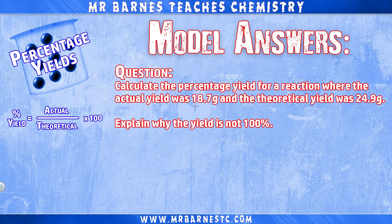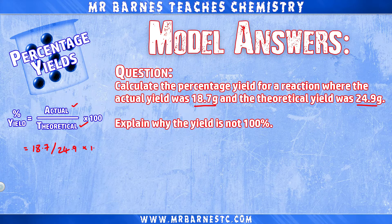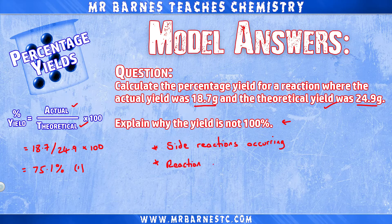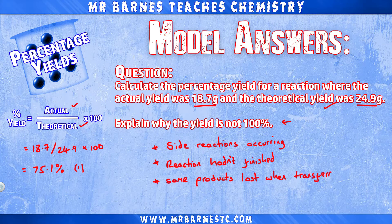Okay, let's go through. Part one, we have the actual yield of 18.7 and the theoretical yield of 24.9. So simply, 18.7 divided by 24.9 multiplied by 100 gives 75.1%. Why is it not 100%? Any two of the following would give you two marks: side reactions occurring, the reaction hadn't finished, or some products are lost when transferring between beakers. And that is it.